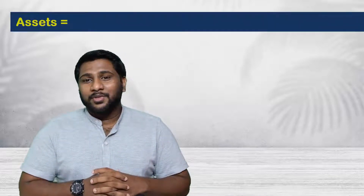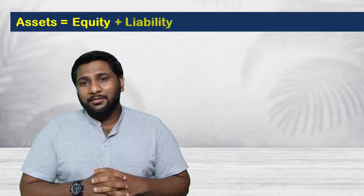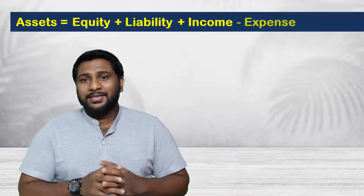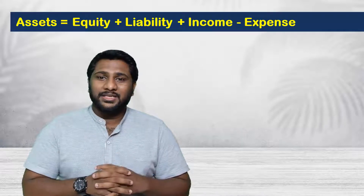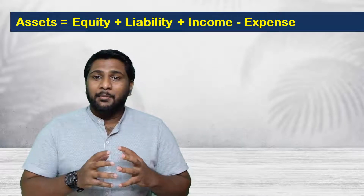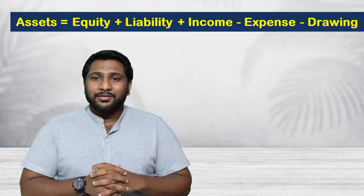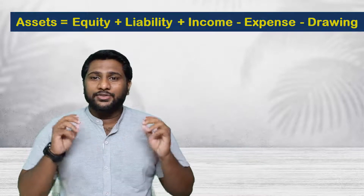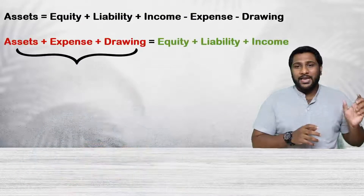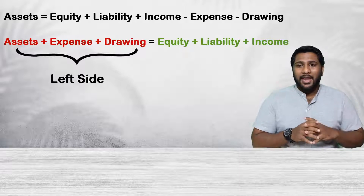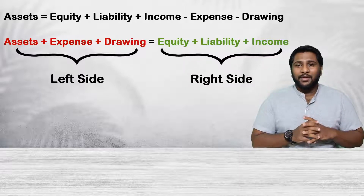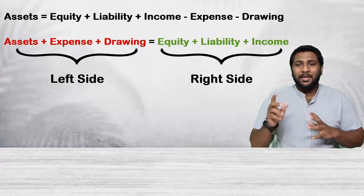So what's the accounting equation that we have learned? Assets equals equity plus liability plus income minus expenses, and if it is a sole or partnership business there will be minus drawings also. So let me rearrange this formula: on the left side of the equation you have assets, expenses, and drawings, and on the right side you have equity, liability, and income.